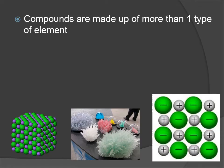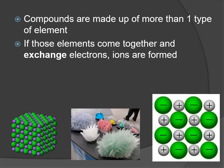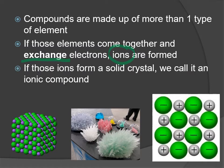Ionic compounds. Recall that a compound is made up of more than one type of element. If you just have one element, it's called an element. If you combine more than one type of element, you can get a compound. If those elements, when they combine, exchange electrons—one of them loses electrons, the other gains electrons—we know that ions are going to end up being formed. If those ions form a solid crystal, we call it an ionic compound.